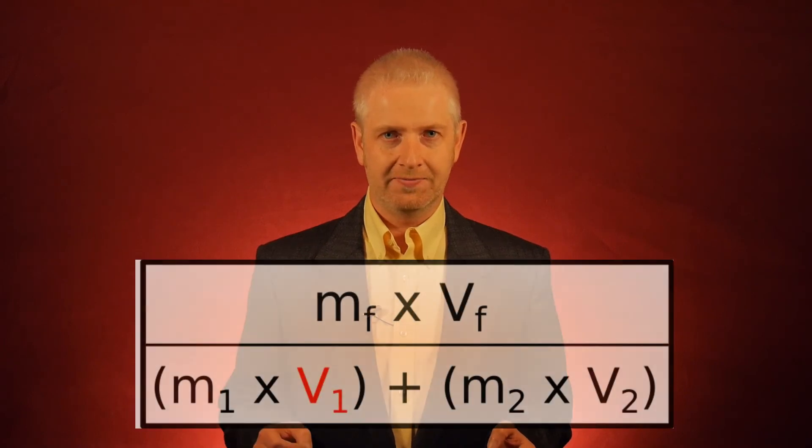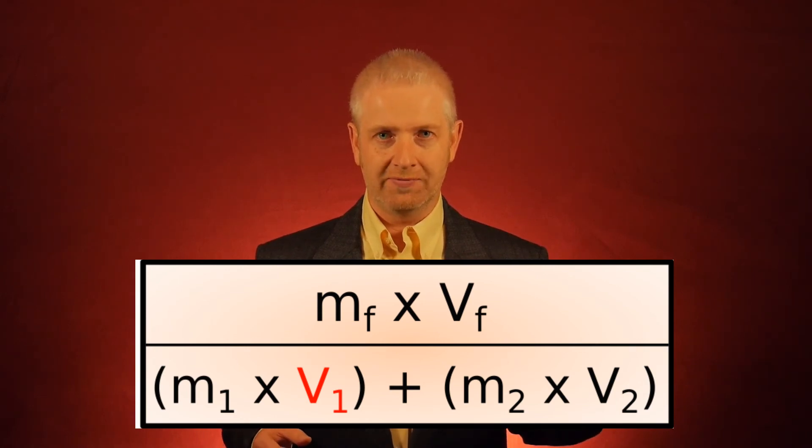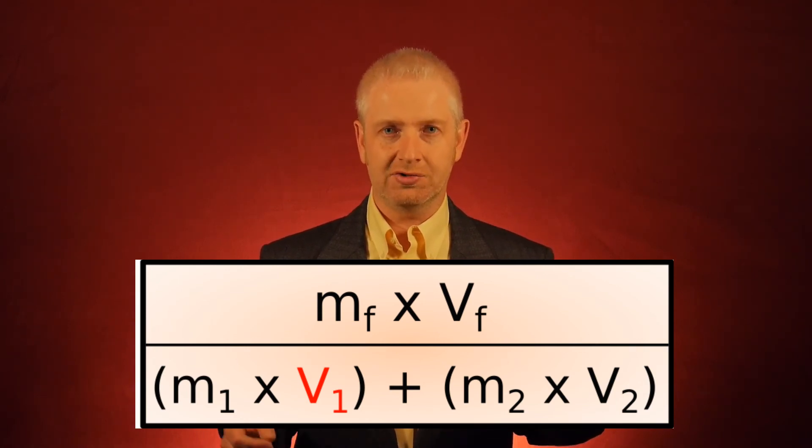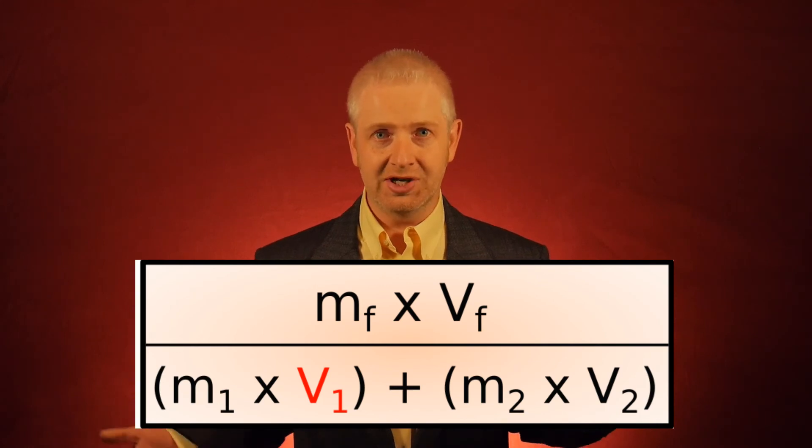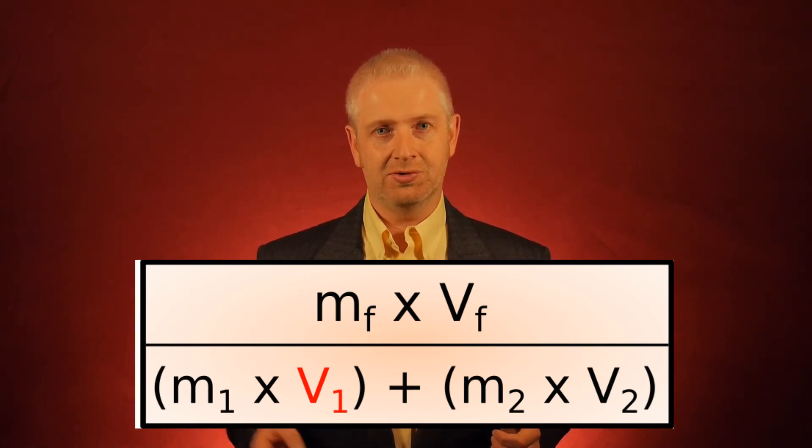Alright. So let's try a more complex one. Let's look at finding V1. So let's follow our two rules. Rule number one: is anything else added to or subtracted from it? And the answer is yes. We have M1 times V1 plus M2 times V2. So we have plus M2 times V2.